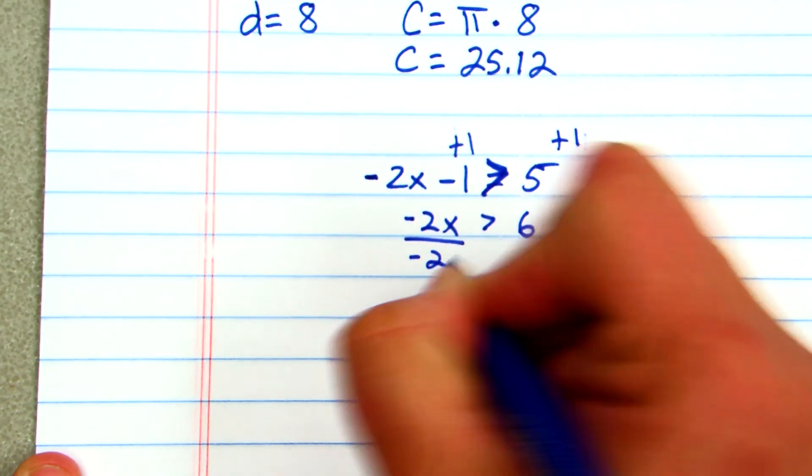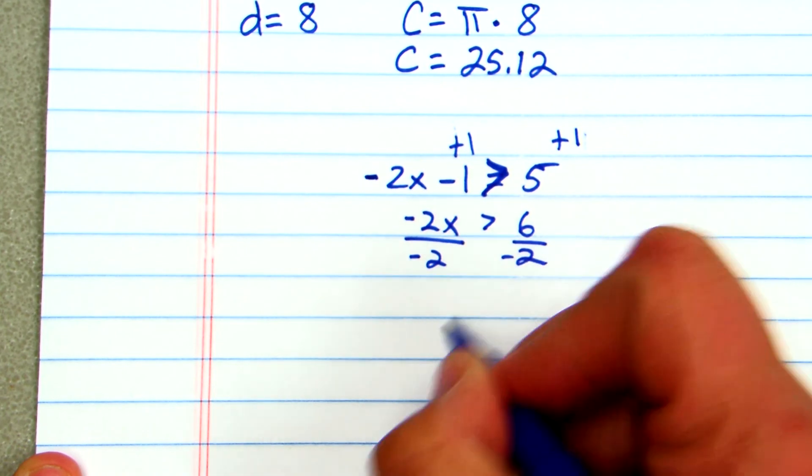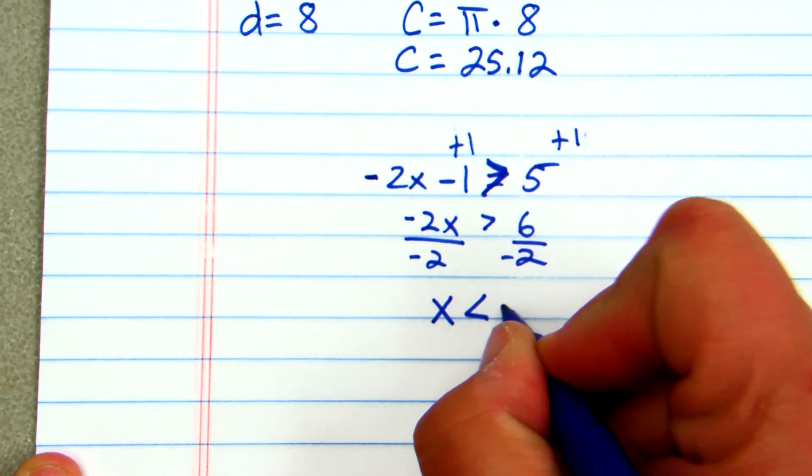Now I'm going to divide by negative 2. Anytime we divide by a negative number or multiply, we change the direction of the sign. And I get x is less than negative 3.